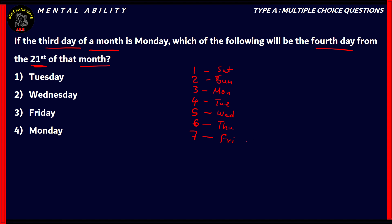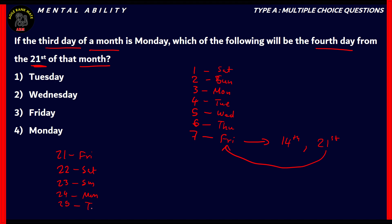The 7th day is Friday. Adding 7 gives us that the 14th is also Friday, and so is the 21st. The question asks for the fourth day from the 21st, meaning we need the 25th. Counting forward: 22nd is Saturday, 23rd is Sunday, 24th is Monday, and the 25th is Tuesday. So Option 1, Tuesday, is the correct answer.